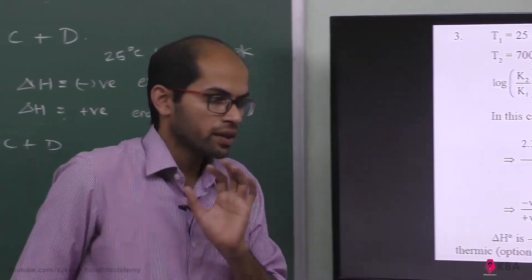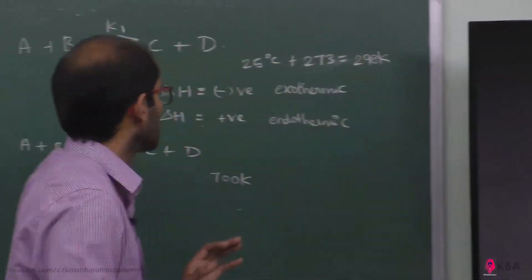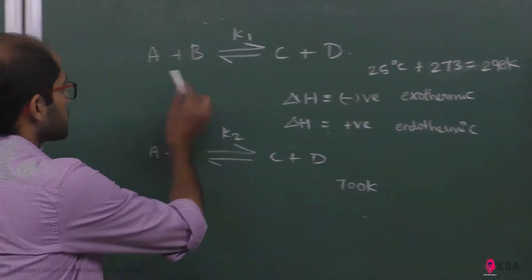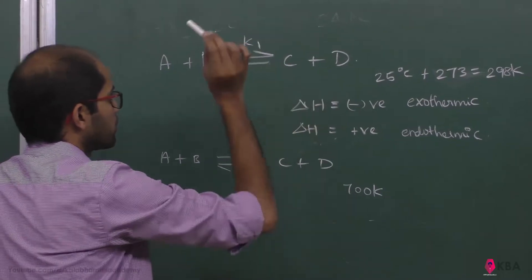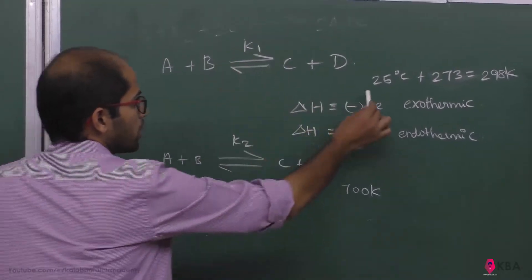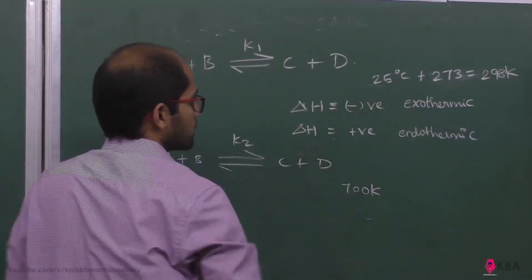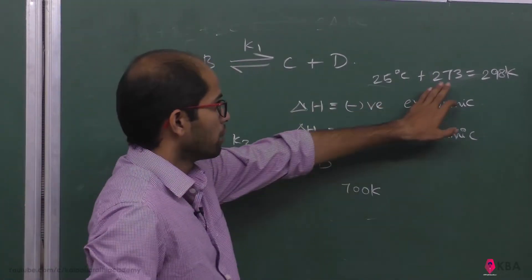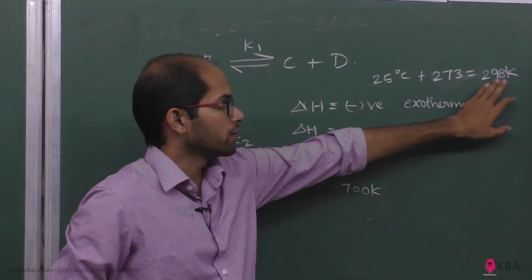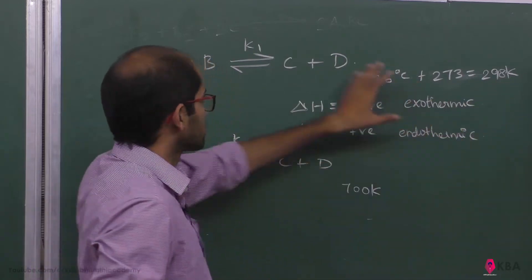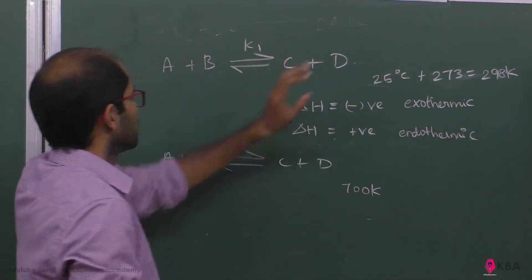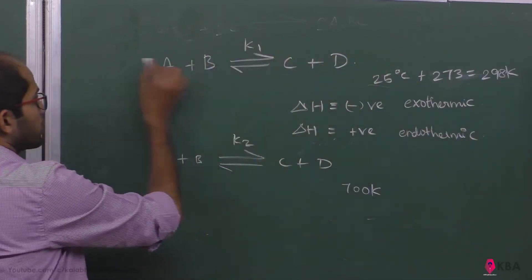Consider the basic reaction: A plus B gives C plus D. The first equilibrium constant K1 is at 25 degrees Celsius, which is 25 plus 273 equals 298 Kelvin — this is temperature T1.